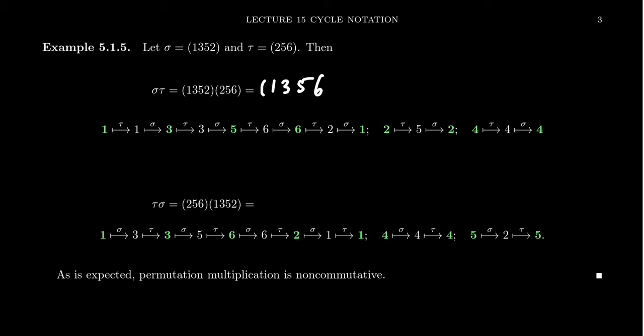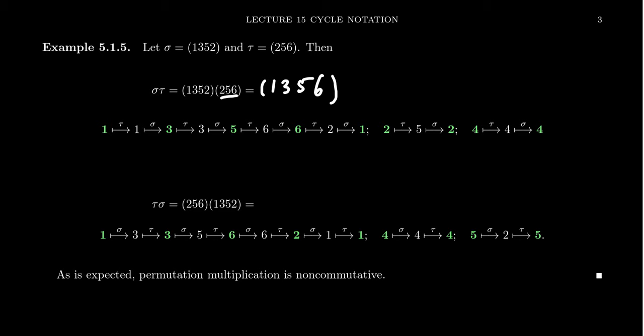Next, tau sends 6 to 2, and sigma sends 2 to 1, so the composite sends 6 to 1. Since 1 started the cycle, we close it off. Two maps to itself, and 4 is fixed by both sigma and tau. So the product of this four-cycle by a three-cycle is in fact a four-cycle.